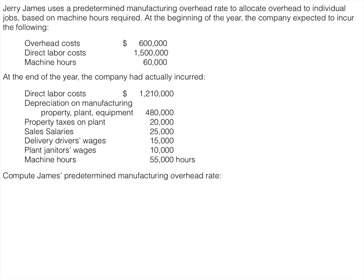Our first example is specifically speaking to a manufacturing company. Jerry James uses a predetermined manufacturing overhead rate to allocate overhead to individual jobs based on machine hours required. So let's start out knowing we're going to have to pick out these key words. It says here that our overhead is allocated based on machine hours, so you already know our allocation base and our cost driver.